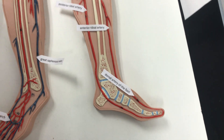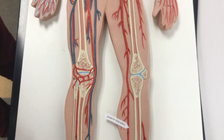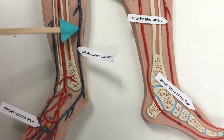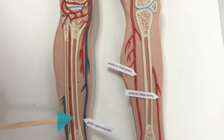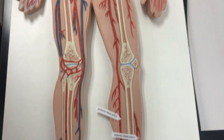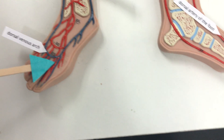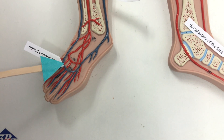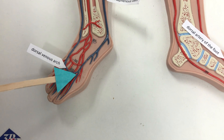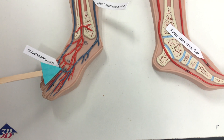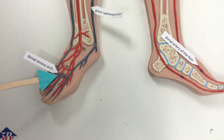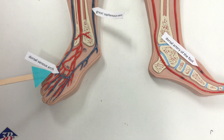The great saphenous vein is often used if we need a piece of blood vessel. On the foot we also have the dorsal venous arch on the dorsal side of the foot, shaped like an arch, carrying deoxygenated blood — so it's venous.